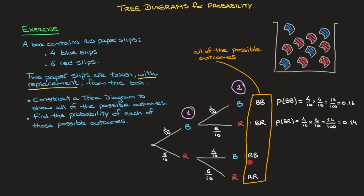Carrying on, the probability of picking red followed by blue — the path along the tree diagram would be red followed by blue. The probabilities encountered are 6 over 10 and 4 over 10. So the probability of red followed by blue equals 6 over 10 times 4 over 10, which is 24 over 100, or 0.24 as a decimal.